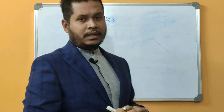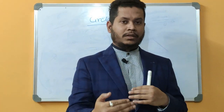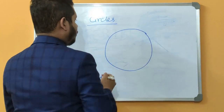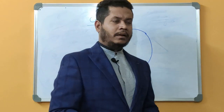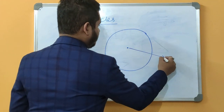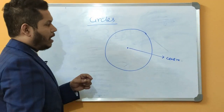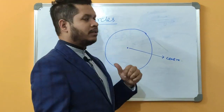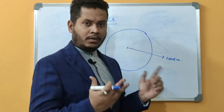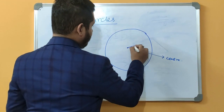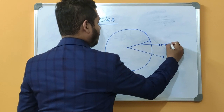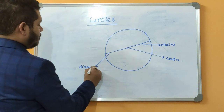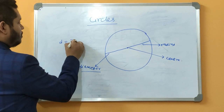In circles, we first have to understand a few basic terms. Let us draw a circle. Now, a few basic parts of the circle we already know from lower classes. This point is our centre — the point around which a particular point revolves at the same distance throughout, forming the circle. This particular length is called the radius, which we are already aware of, and double of it is our diameter. Diameter is twice the radius.